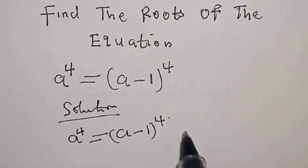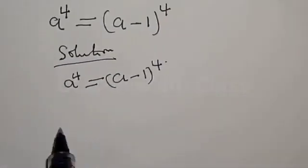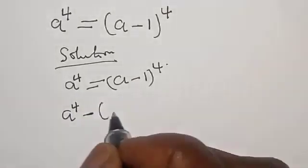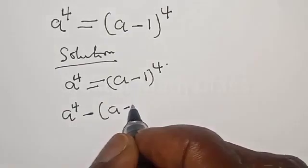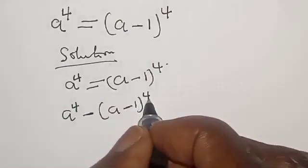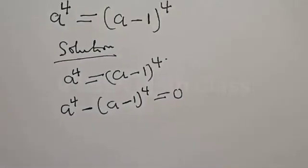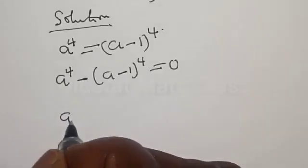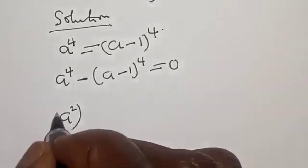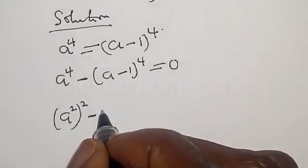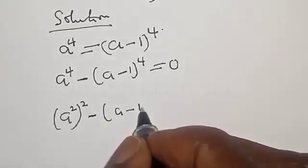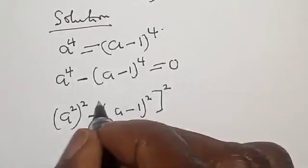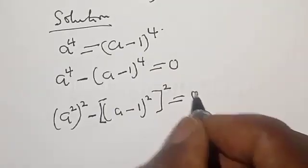Solution: we have a⁴ = (a-1)⁴. Then we rearrange to get a⁴ minus (a-1)⁴ equal to zero. Now remember, a⁴ can be expressed as (a²)² minus (a-1)² all squared, equal to zero.